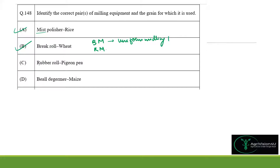Coming to option C: it says rubber rolls are used for pulse milling, which is not true. We use rollers coated with carborundum in order to mill pulses. Hence option C is not correct.